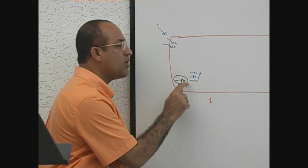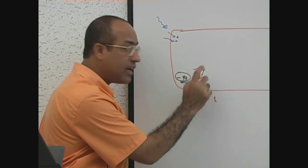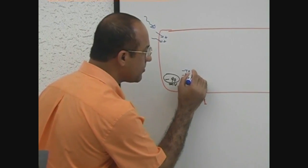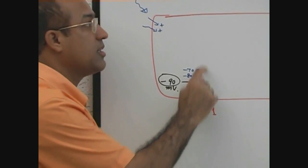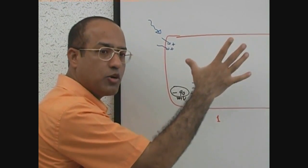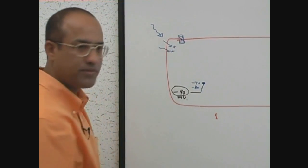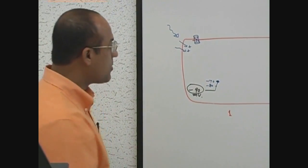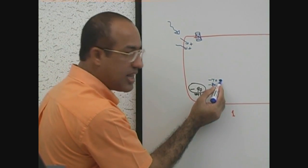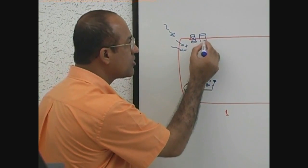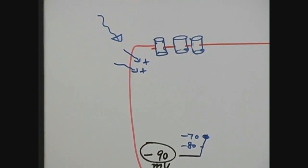As soon as the resting membrane potential moves from minus 90 millivolts towards the threshold potential — let's suppose threshold potential in this cell is minus 70 millivolts — the membrane will suddenly open voltage-gated sodium channels. These channels are normally off, but as you stimulate the cell and cations come in, resting membrane potential moves toward threshold. As soon as it touches the threshold, voltage-gated sodium channels open up, and a lot of sodium comes in.